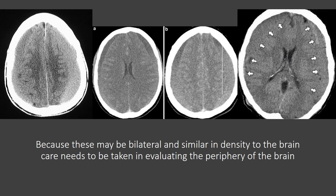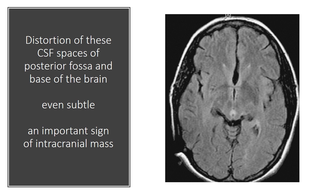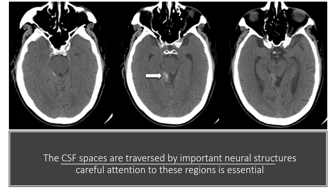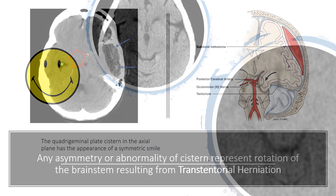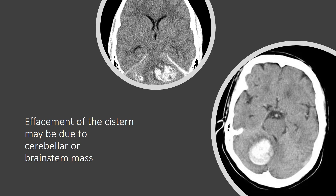Because these may be bilateral and similar in density to the brain, care needs to be taken in evaluating the periphery of the brain. Two important CSF spaces within the brain are the quadrigeminal plate cistern and the suprasellar cistern. Distortion of these CSF spaces of the posterior fossa and base of the brain, even subtle, is an important sign of intracranial mass. The CSF spaces are traversed by important neural structures, so careful attention to these regions is essential. The quadrigeminal plate cistern in the axial plane has the appearance of a symmetric smile. Any asymmetry or abnormality of the cistern represents rotation of the brainstem resulting from transtentorial herniation. Effacement of the cistern may be due to cerebellar or brainstem mass.